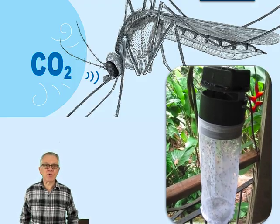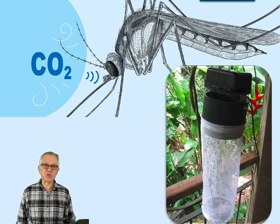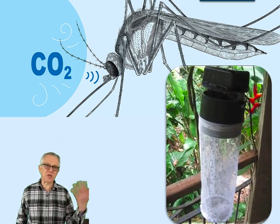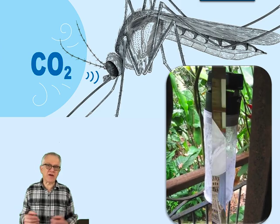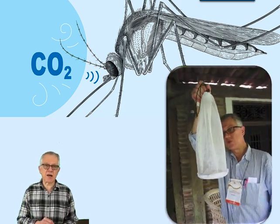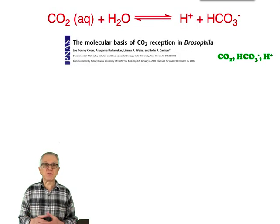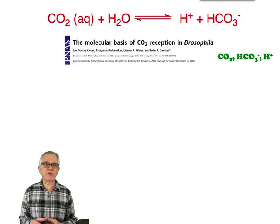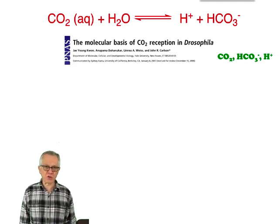As we know, carbon dioxide is a very important attractant for mosquitoes. Traps have been used since the early 1950s, and one disadvantage is that they don't capture many gravid mosquitoes. We know that mosquitoes respond to carbon dioxide, but the question is: do they respond to carbon dioxide itself, to bicarbonate, or to protons?